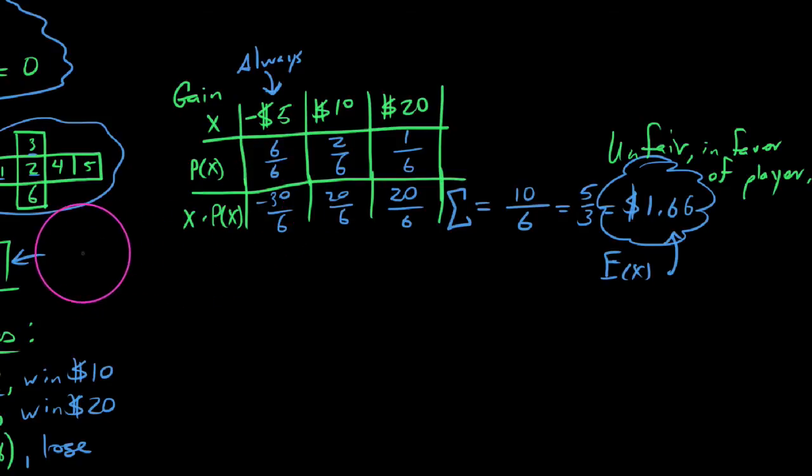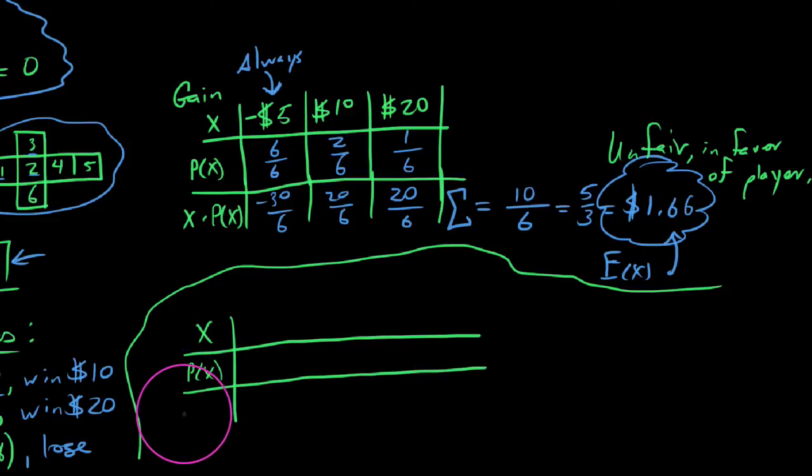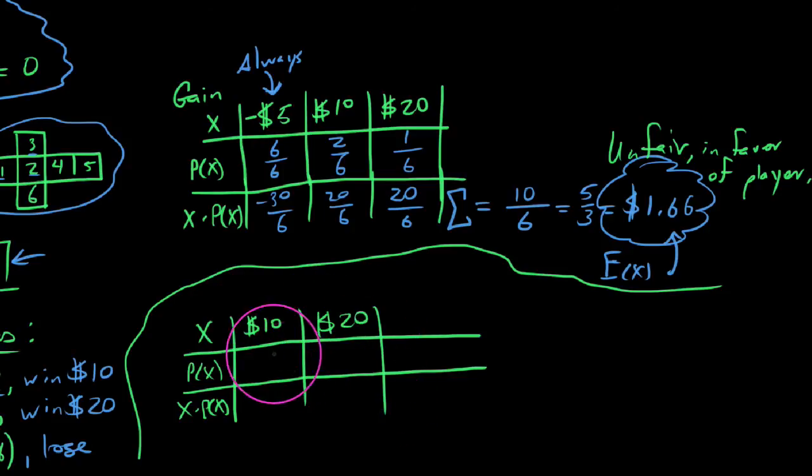Now the follow-up question here was this: how much should we charge if we expect this game to be fair? We're going to have the same approach. We're going to list out all the possible things that can happen and their likelihoods of happening, and then we'll find the long-term average. We still have the fact that we can win $10 and we can win $20, and we still have a 1/6 chance of winning the $20 and a 2/6 chance of winning the $10.